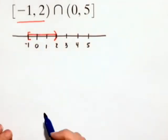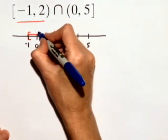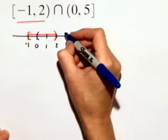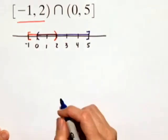Intersection from 0 to 5 does not include 0, so we use a parenthesis, but it does include 5. It's closed on 5, so we have that interval.